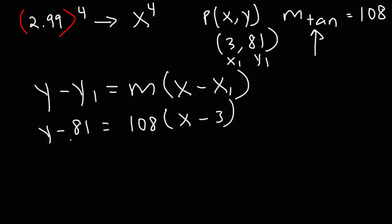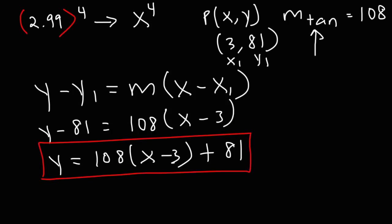Now I'm going to move 81 from the left side to the right side. It's negative on the left side, but it's going to change to a positive value on the right side. So y is equal to 108 times x minus 3 plus 81. So this equation describes the behavior of the curve x to the fourth when x is close to 3.